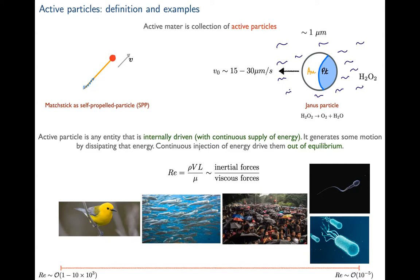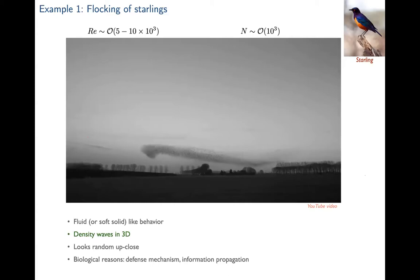We humans are also active agents — we consume energy and move. The key point is that when you have a large collection of active agents or active particles, that defines an active matter system. In the next few slides I'll describe some generic features of active matter and show what happens when many active particles are together.